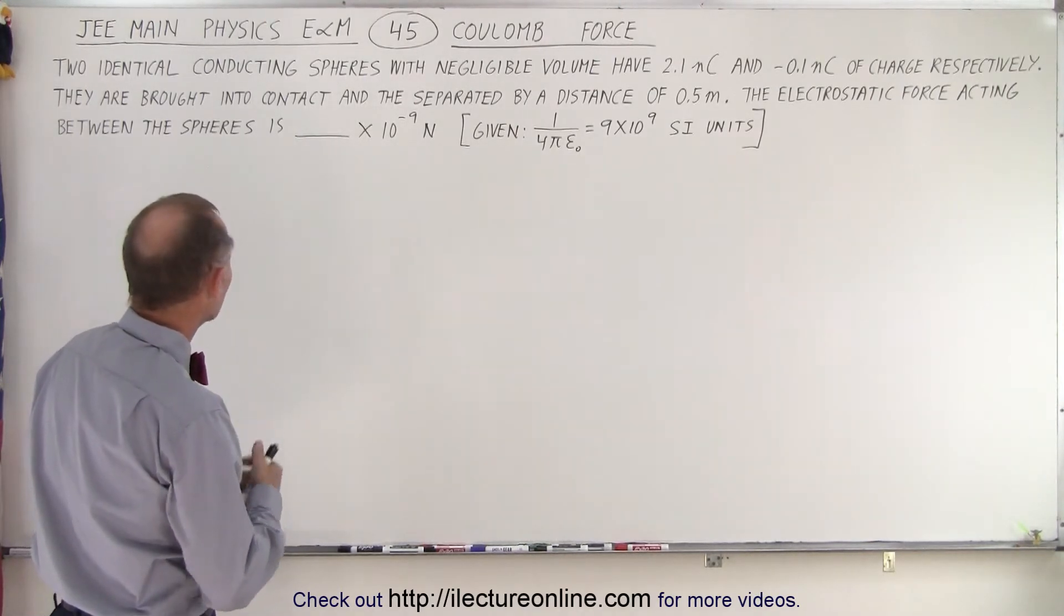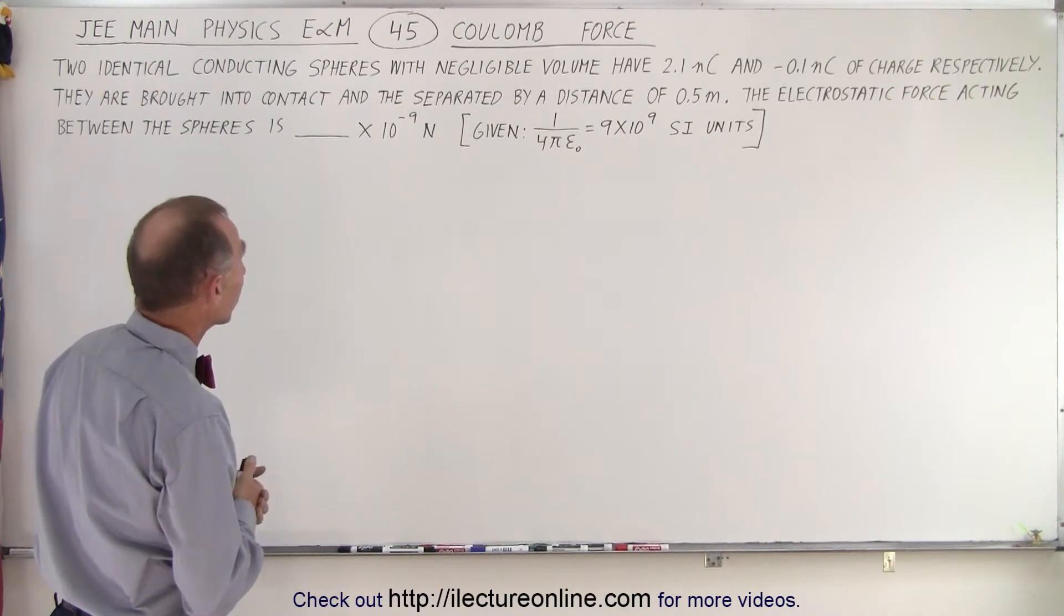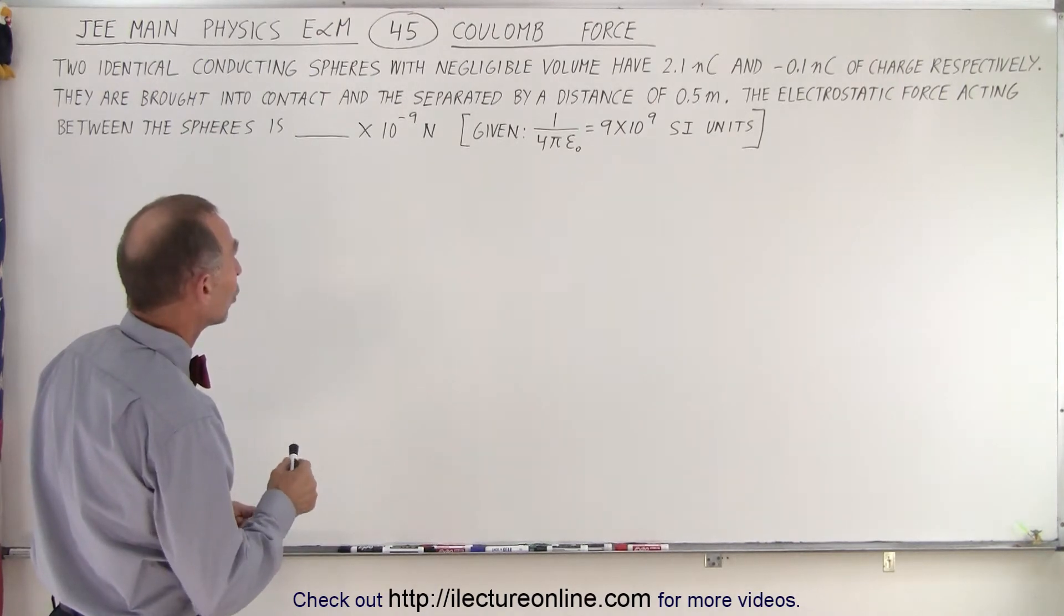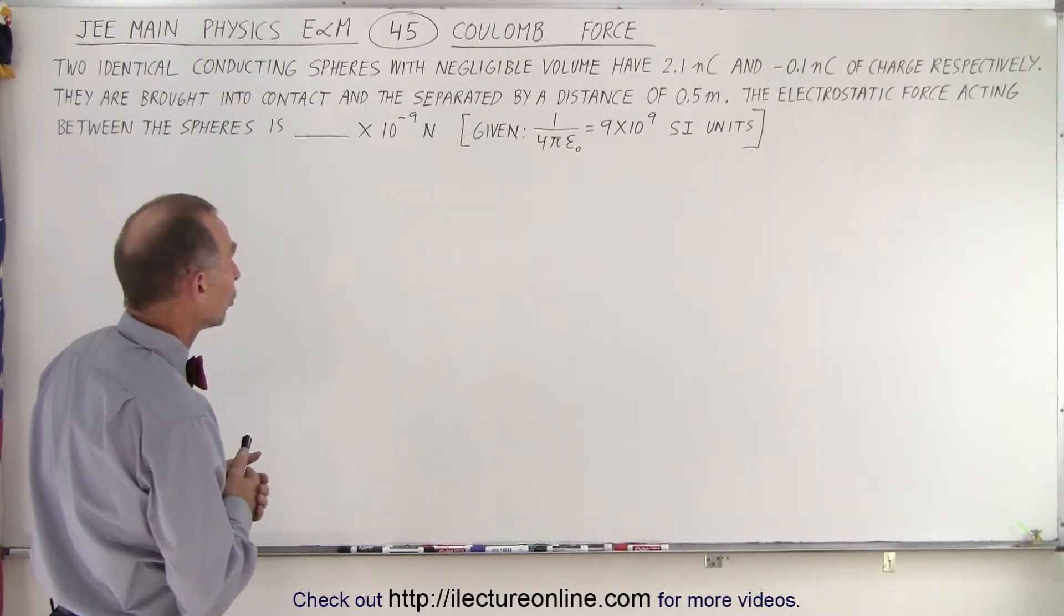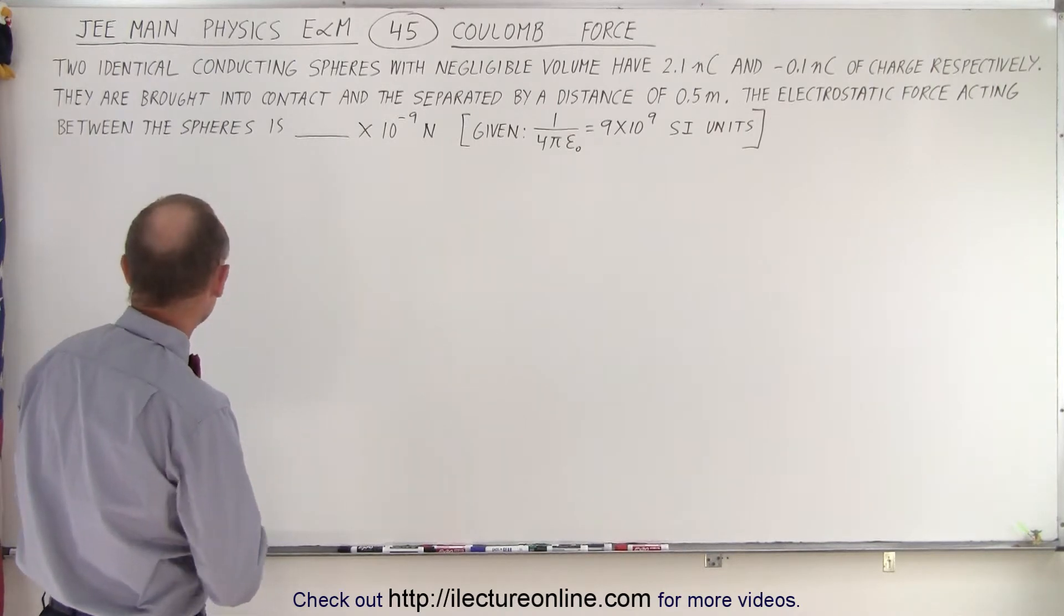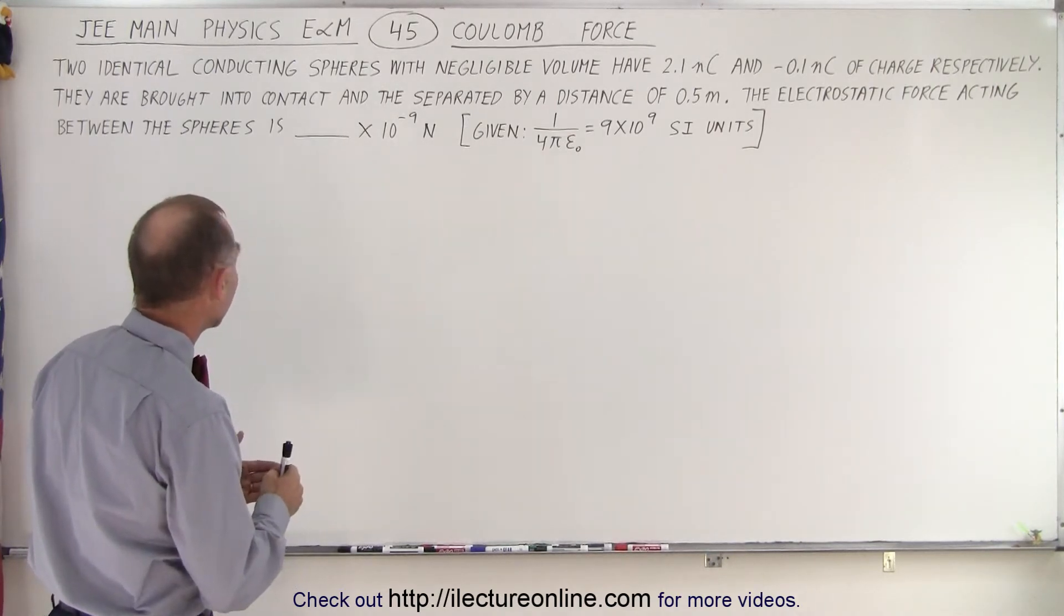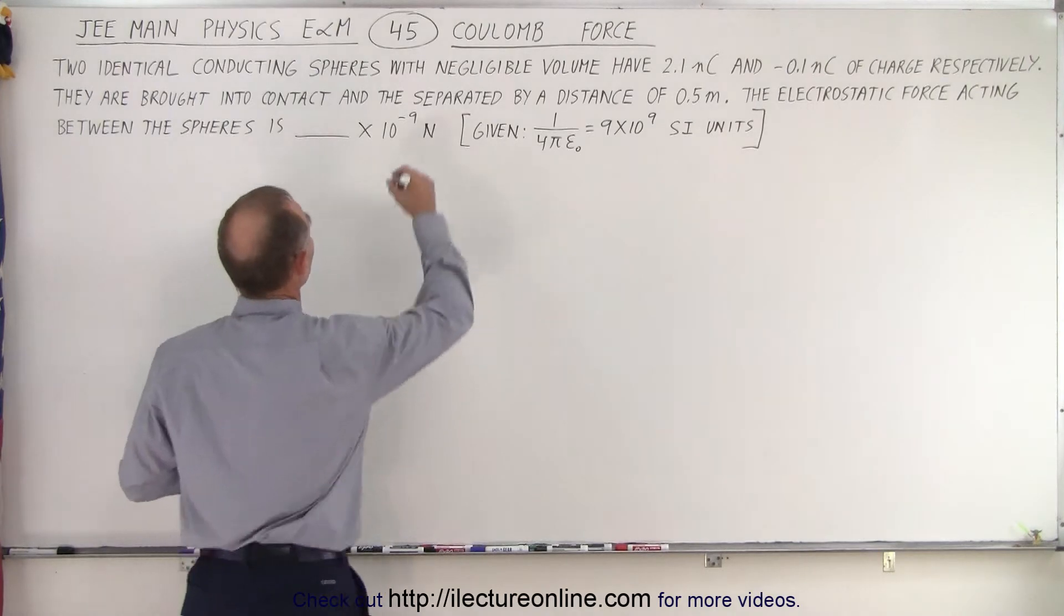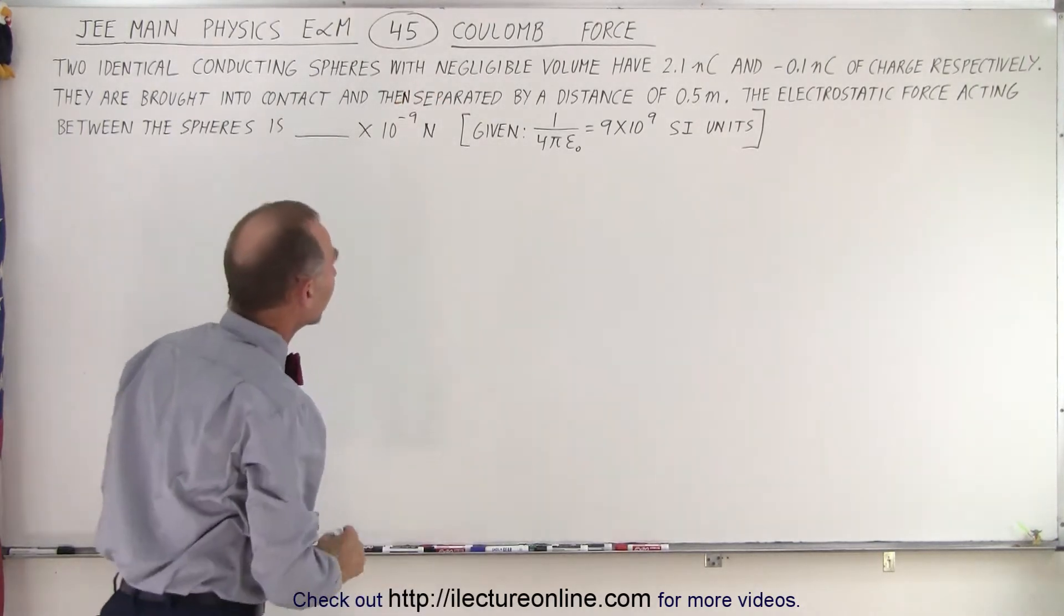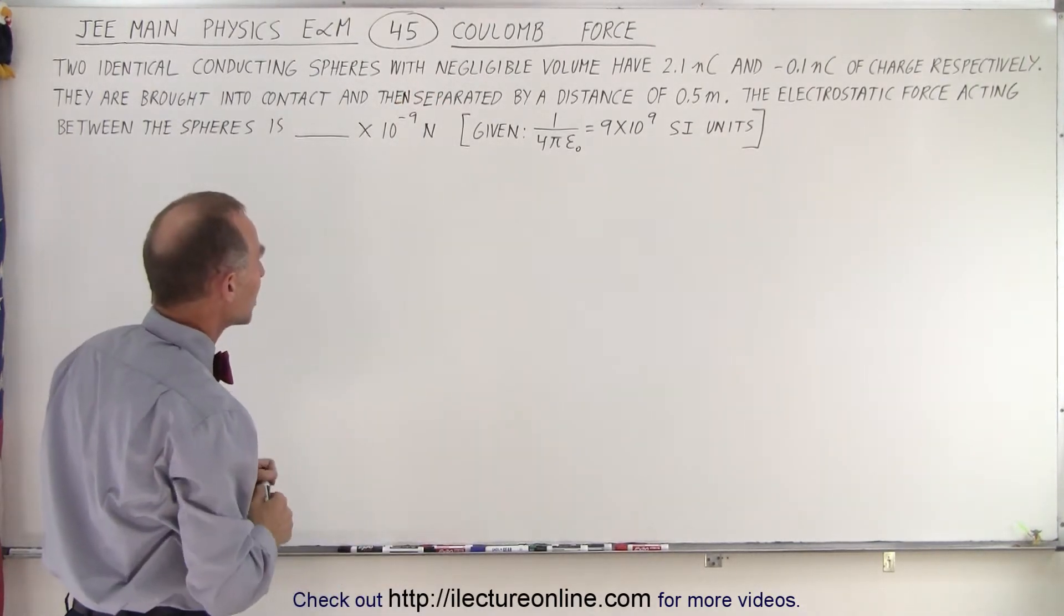We have two identical conducting spheres with negligible volume having 2.1 nanocoulombs and minus 0.1 nanocoulombs of charge respectively. They are both brought into contact and then separated by a distance of 0.5 meters.